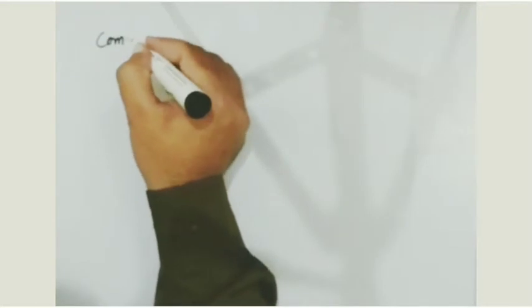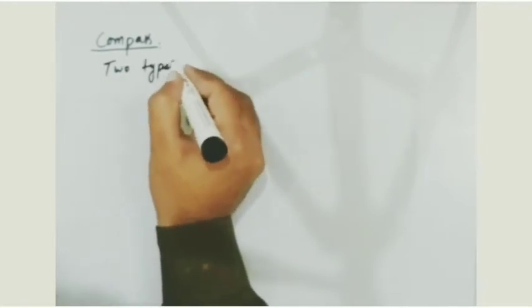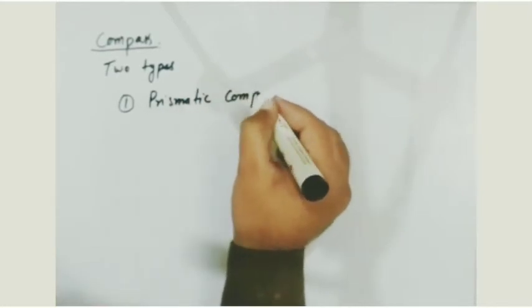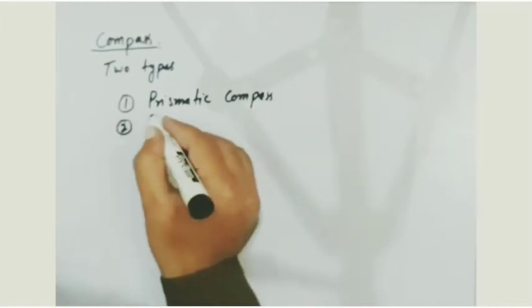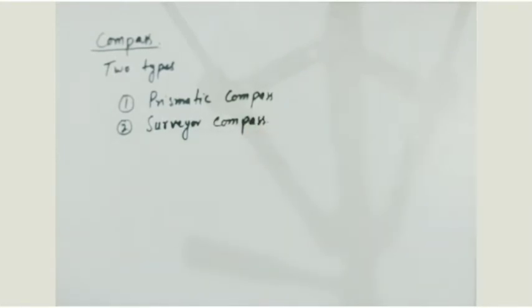What are the instruments to find a bearing? A compass is an instrument with the help of which you can find the bearing. Generally there are two types of compass: one is called prismatic compass and the second one is known as surveyor's compass.